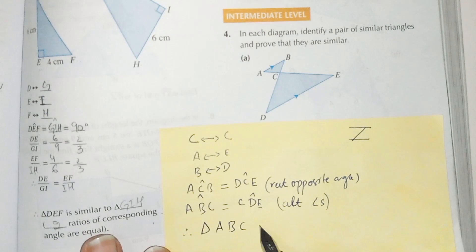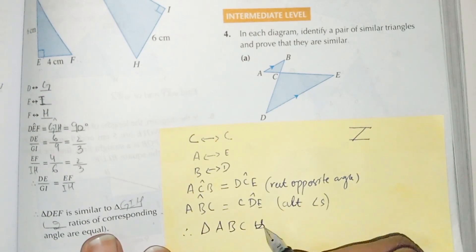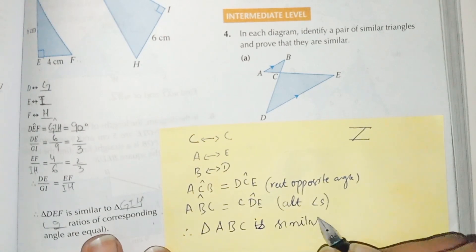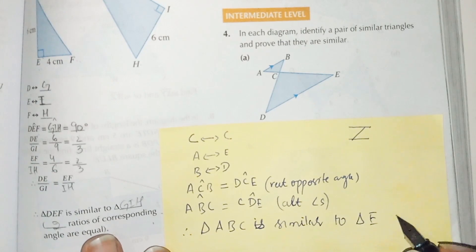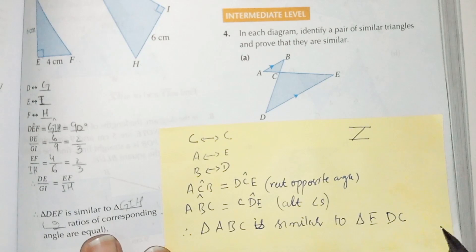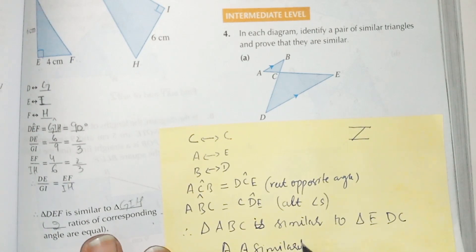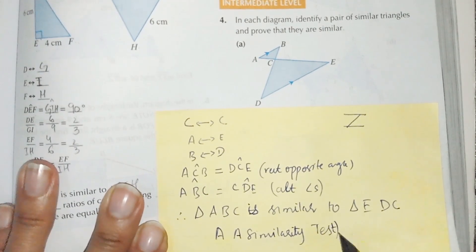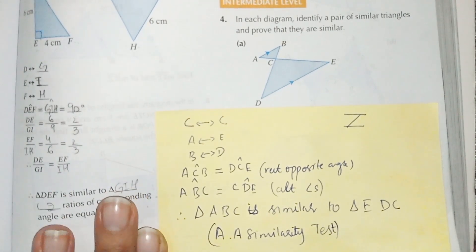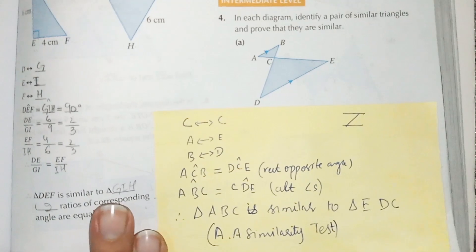Triangle ABC is similar to triangle DCE because of the Angle-Angle similarity test. And now, students, part number A is solved.